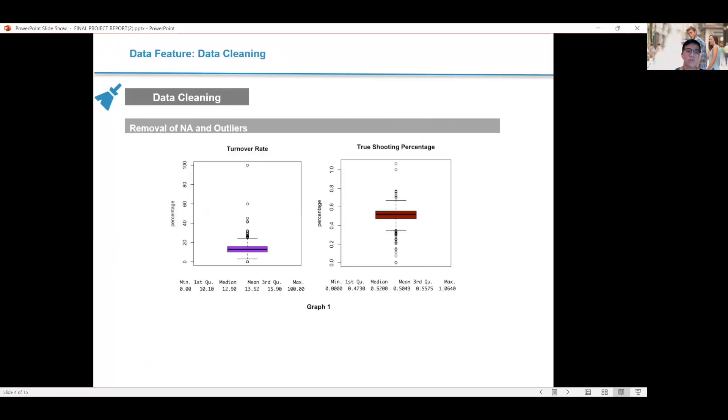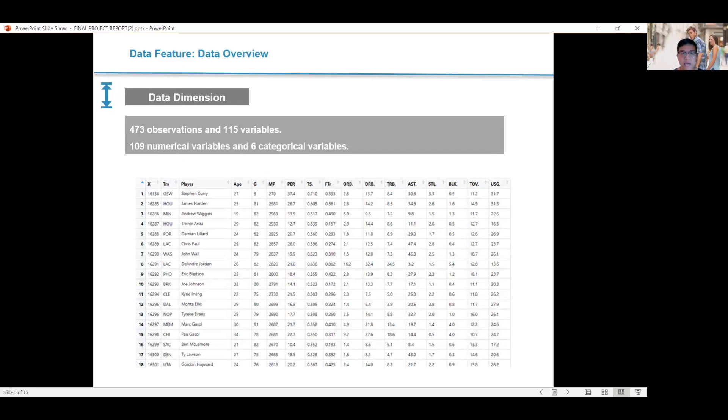And the first step we are going to do is the data cleaning. And because this is a raw dataset, there are going to be a lot of missing values and outliers. How we deal with this is we included the players that have more than 15 games per season so that their numbers, so that their datas are more documented and also less prone to be outliers in the dataset. And after that, data cleaning leaves us with 473 observations and over 100 variables, including six categorical variables. And this is an overview of our data.